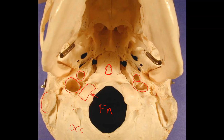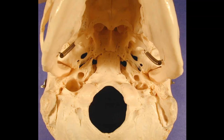I see a mastoid process here and, right there, this little pokey thing coming at you is a styloid process, and in between would be a stylomastoid foramen. Behind the occipital condyles here would be the condylar foramina. Narrowing in on the sphenoid bone, I can see the big giant foramen ovale and the teeny tiny foramen spinosum. That would mean that somewhere in here, although this is not the best image, would be foramen lacerum.